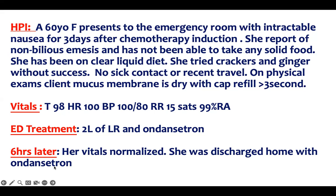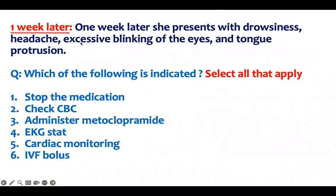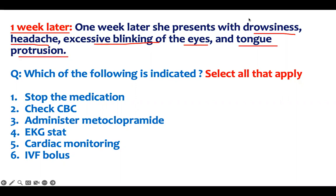Patient came with nausea and vomiting due to chemotherapy induction, looked dehydrated — given IV fluids and ondansetron. So what is the question? One week later, she presented with drowsiness — buzzword — headache — buzzword — excessive blinking of the eye — buzzword — and tongue protrusion — buzzword.